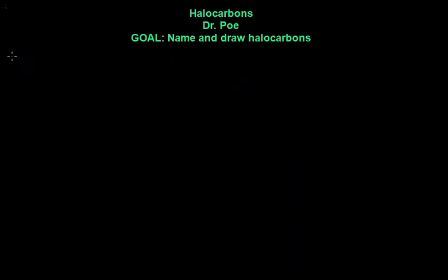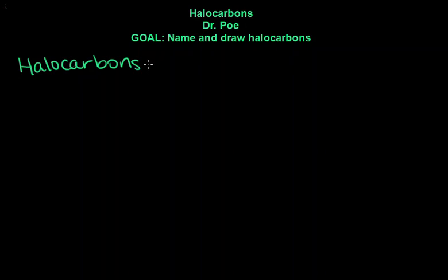The rules for naming halocarbons: these are always going to have any group 7 element, so you have to say which one it is. Is it fluorine? Is it chlorine? Is it iodine? Is it bromine? Et cetera. So we're going to have to name those specific atoms and also name where they are so somebody else could draw these.